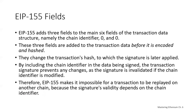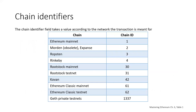EIP-155 added extra fields to the transaction data — the chain identifier and a couple of other fields — which change the transaction's hash to which the signature is applied, preventing replay attacks. This was part of the Spurious Dragon hard fork. Chain identifiers include: Ethereum mainnet with chain ID 1, various testnets like Ropsten, Rinkeby, Rootstock, and Kovan with their own chain IDs, Ethereum Classic mainnet with ID 61 and testnet 62, and private Geth test nets with IDs like 1337.